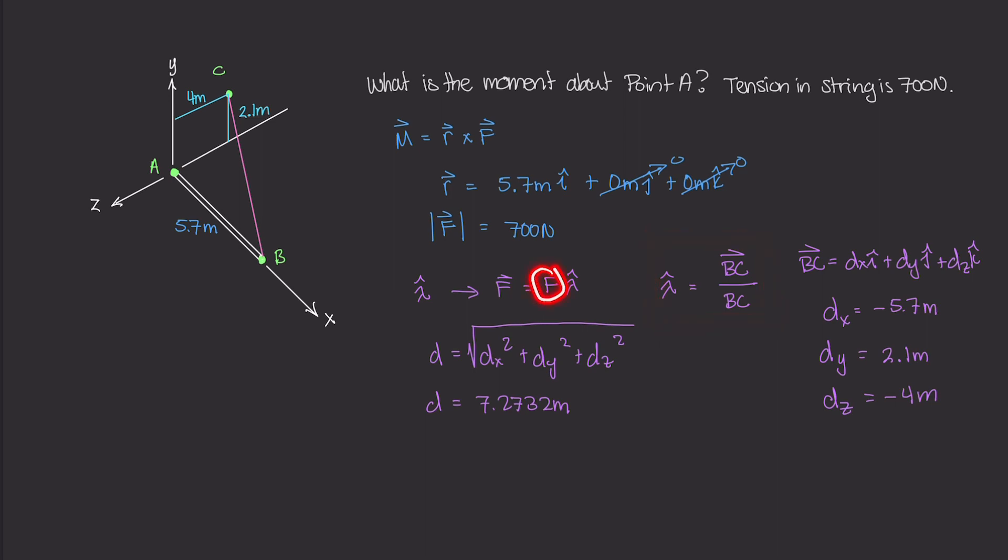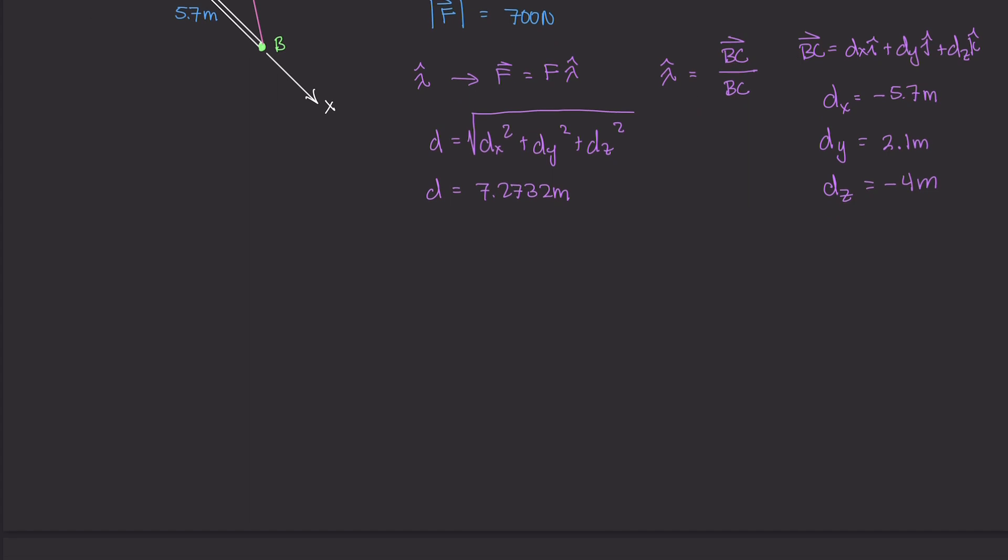So this is the value for BC. And this along with these three values are the values of this BC vector, and that gives us lambda. Now, F, we already know it's 700 newtons. So we have 700 newtons times this unit vector. If I were to write all that out, so it's a little bit clearer, our F vector is F is just 700 newtons times our unit vector lambda, which is BC over BC. And it turns out to just be this right here. So all I did was I took these three values, plugged it into here, and that gave me this numerator. And then our BC value is what we calculated for d. And that gave us the denominator.